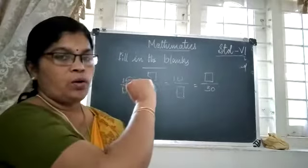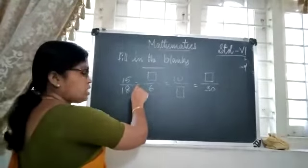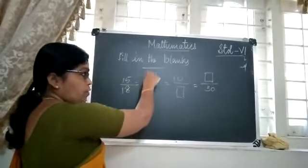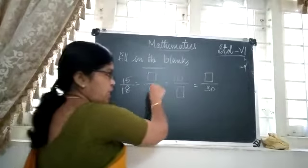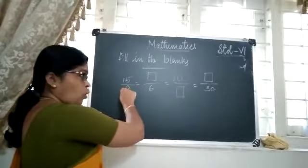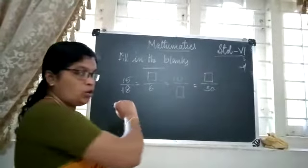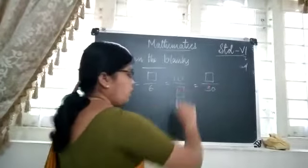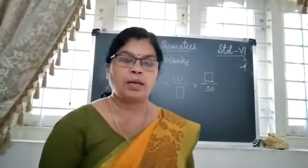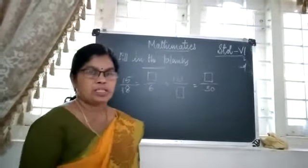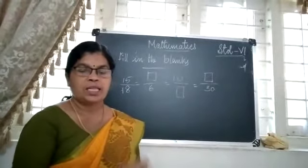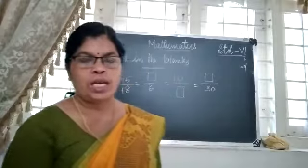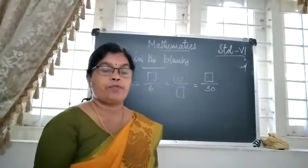The numerator is not there, but there is an equal sign, meaning these two fractions are equal. We have to find the numerator. Then the next fraction — the denominator is absent, we have to find that. And in the last fraction, the numerator is not there. All these fractions are equal. Fractions are ratios also — when we divide two quantities, we get the ratio. So here these ratios are the same.